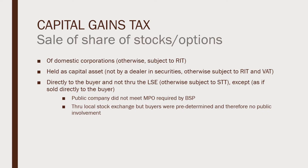The first type of transaction subject to CGT is the sale of shares of stock of domestic corporations. If owned by foreign corporations, it will be subjected to regular income tax. It should also be held as a capital asset — meaning it is not held by a dealer in securities, whose inventory consists of shares of stocks. If held by a dealer in securities, it will be subjected to regular income tax and VAT. Lastly, it should be sold directly to the buyer and not through the local stock exchange; otherwise, it will be subject to stock transaction tax.